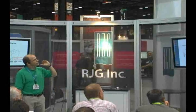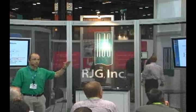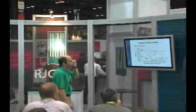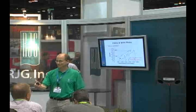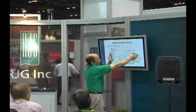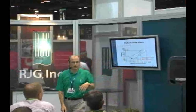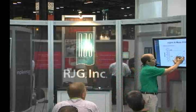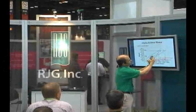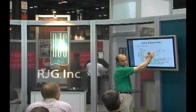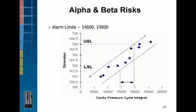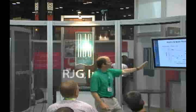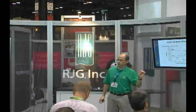Now, the good news is we've got a correlation — a measurement that predicts part quality. Where do we set our alarms? If your quality policy says we will never scrap a good part, then we'll set our alarms out here and make sure that we're always containing the bad parts. But that's probably not most of your quality policy. Most quality policies say we're never going to ship a bad part to the customer. We're going to set the alarms tight and make sure that only good parts are getting to the customer. Here's where we typically set our alarms — at this innermost intersection. The bottom line is we now have upper and lower alarm limits that allow us to make sure we're always shipping good parts to the customer.